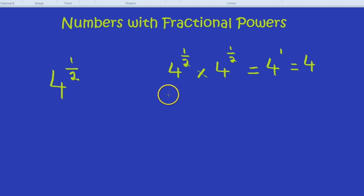But hang on a second. What about the square root of 4 times by the square root of 4? You're right. The square root of 4, which is 2, times the square root of 4, which is 2, 2 times 2 is 4.